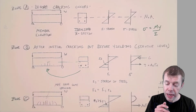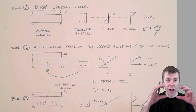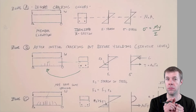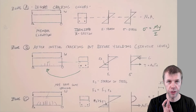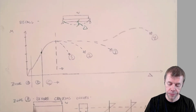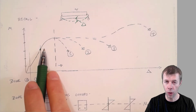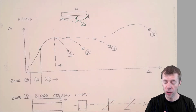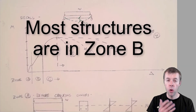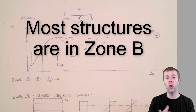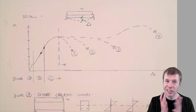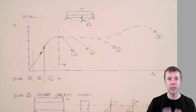If we unloaded the beam in Zone B, the cracks would actually close. When they close all the way, you could still detect them — they're still there, but very, very small. After the end of Zone B, that's not the case anymore — cracks get pretty large. Most structures live somewhere in Zone B under their service loads: cracked, but not too wide, and if unloaded, the cracks get smaller.